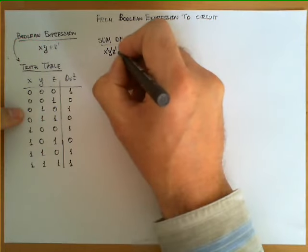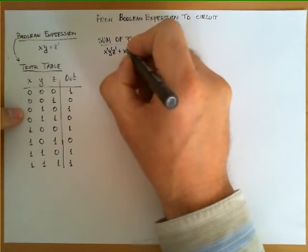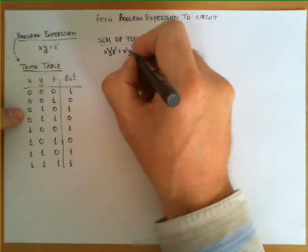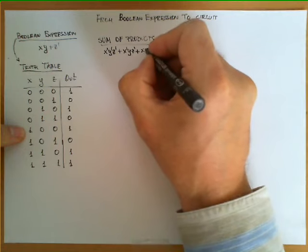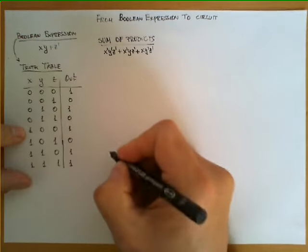This row will be x prime y z prime, this row that has a one as well would be x y prime z prime.